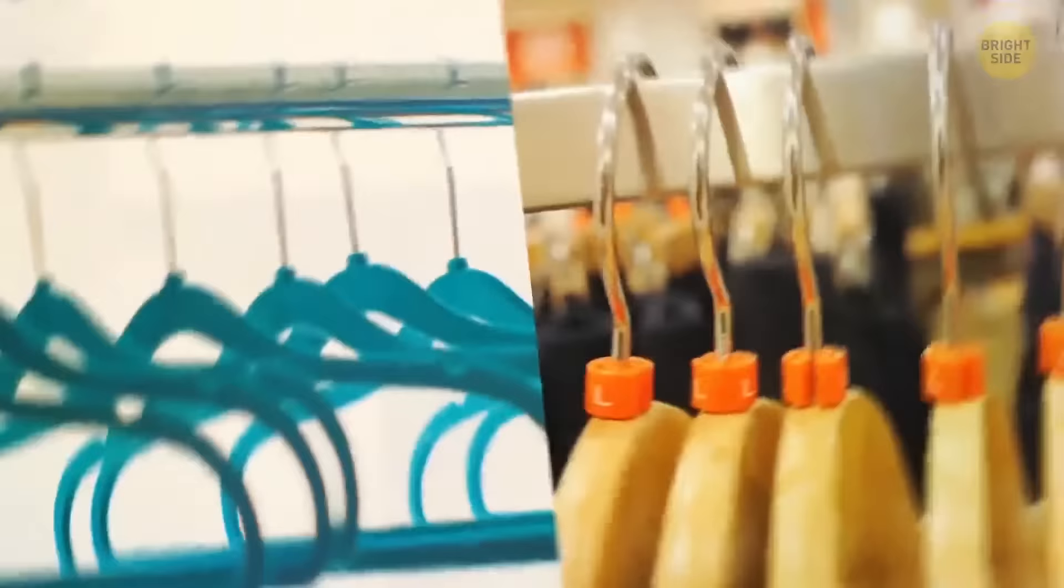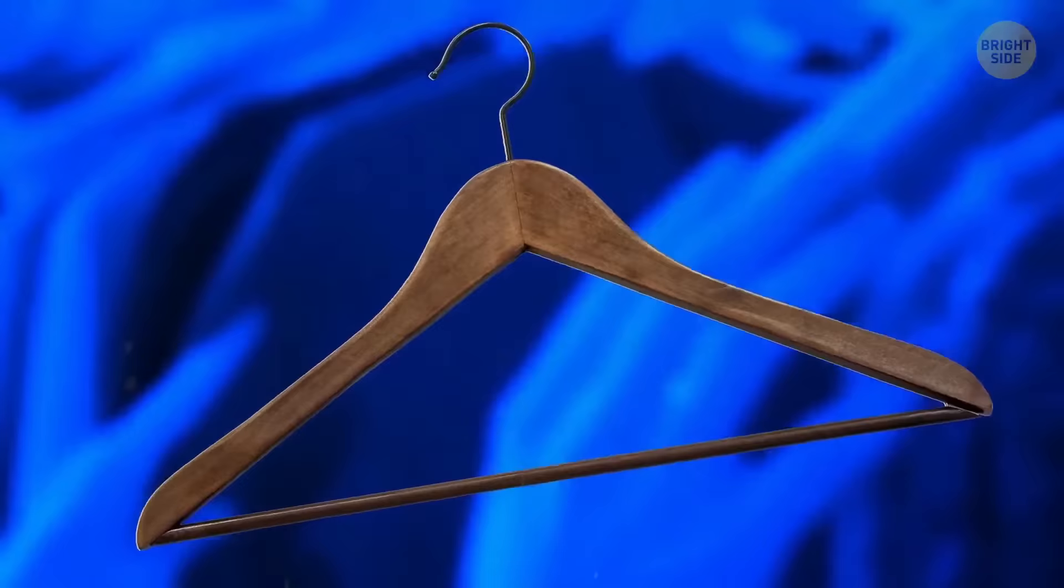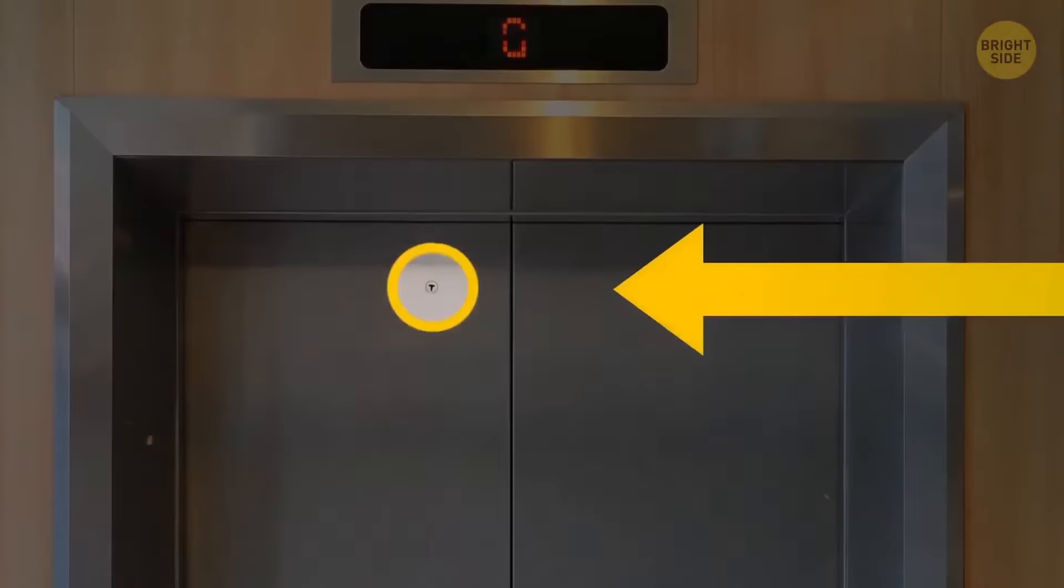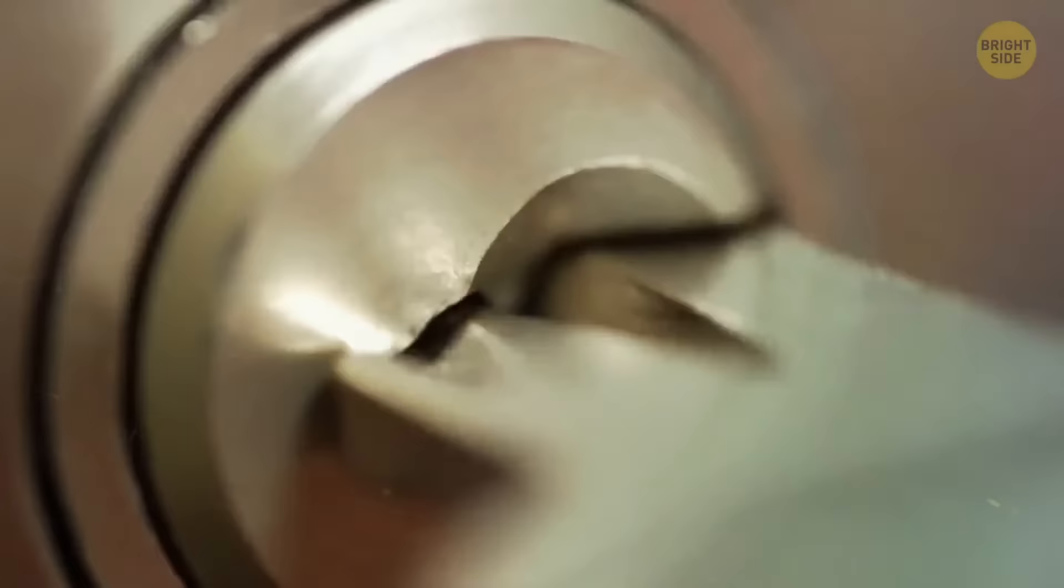What's the difference between a wooden hanger and a plastic one? Aside from helping keep your clothes in shape, cedarwood hangers also repel moths and bugs. If you look closely at an elevator door, you'll notice a tiny hole. This is actually a keyhole used for emergencies or for routine maintenance checks.